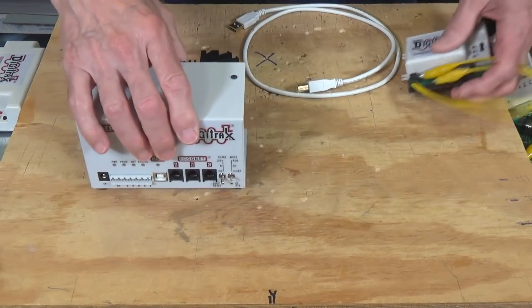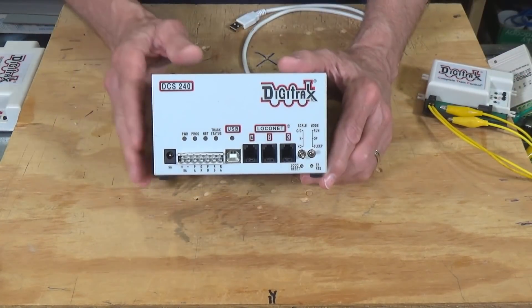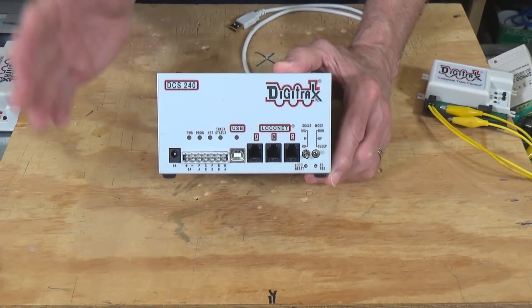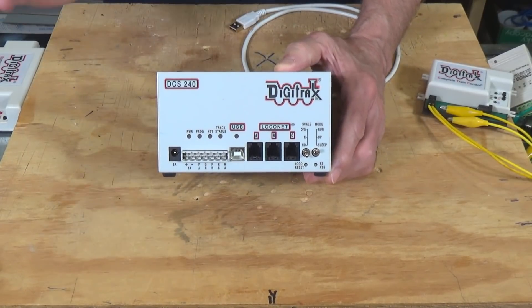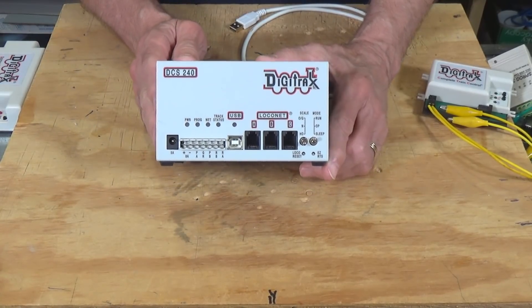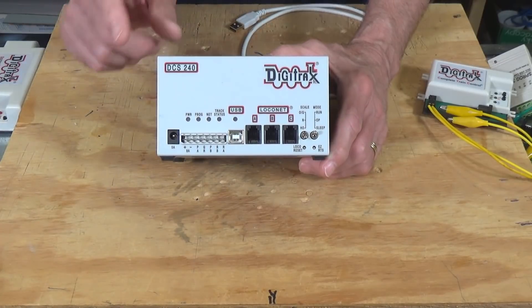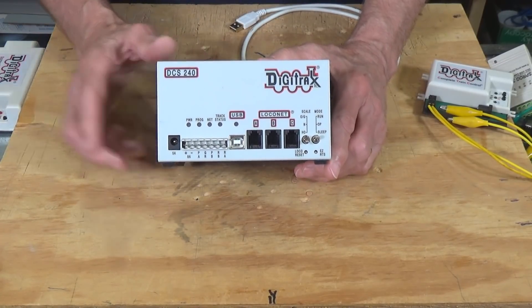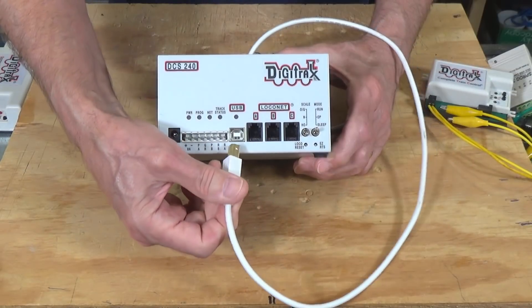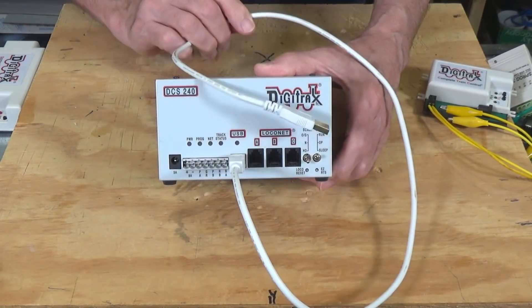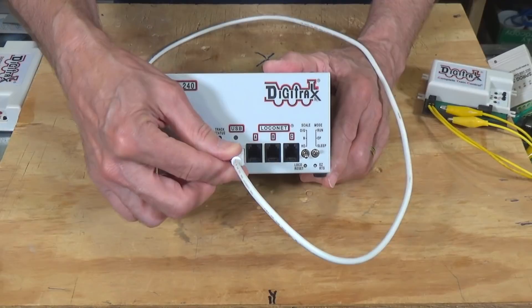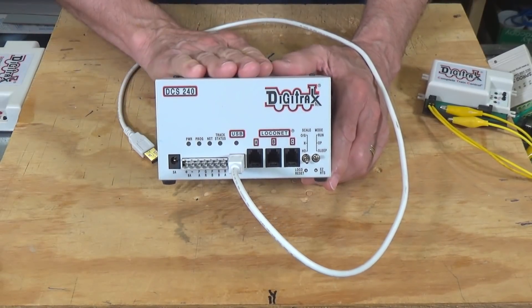Now, finally, let's take a look at this guy here. For the last couple of years, Digitrax has been actively releasing new versions of their command stations and boosters and throttles and their PR3s and 4s. So what we have here is the DCS240, which is their top of the line command station. It has lots of memory. But the thing I want to point out that they have been adding to all of their new command stations are USB ports. So in this case, the command station has the interface built in. So you just plug it in there, plug that into your computer, and then you can use the command station with JMRI to an interface with your loco net system.